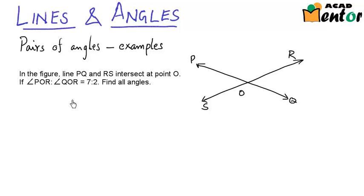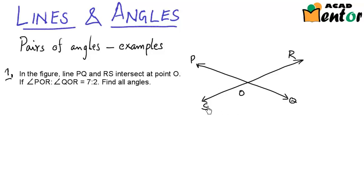Hi, we were talking about the concept of pairs of angles and in this video we will look at a few examples related to it. Here is the first example. In the figure given, line PQ and RS intersect at point O. If angle POR to angle QOR is 7 to 2, we are supposed to find out all the angles.